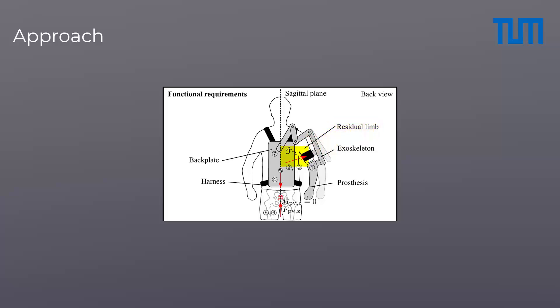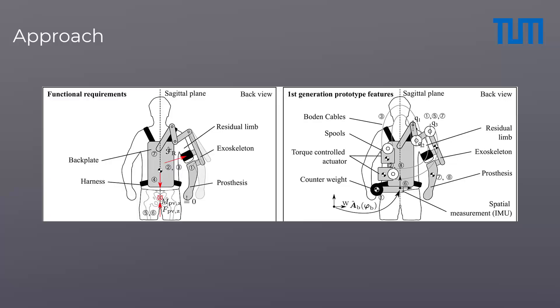As exoskeleton and prosthesis are unsymmetric with respect to the sagittal plane, an ergonomic solution has to be found. For this, we demand the moment at the pelvis to be zero and the forces at the pelvis to be minimal. To achieve this, we make the exoskeleton passive and put the actuation on the contralateral side of the human body. We use Bowden cables to transmit the torque from the actuators to the exoskeleton joints.